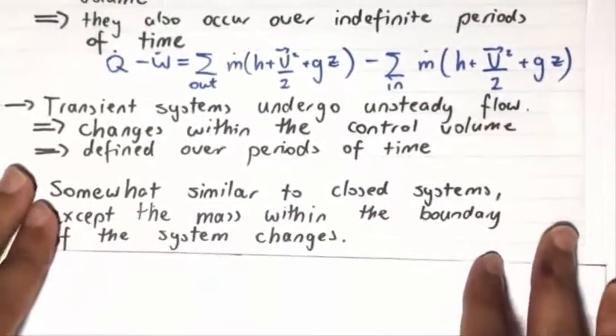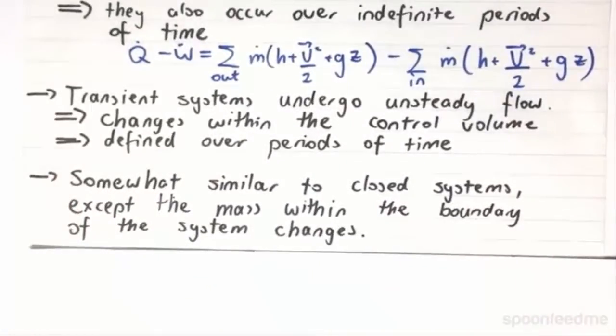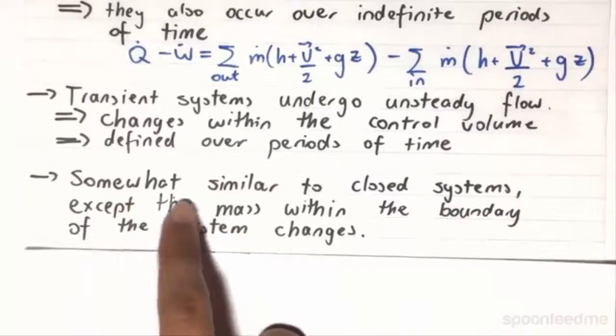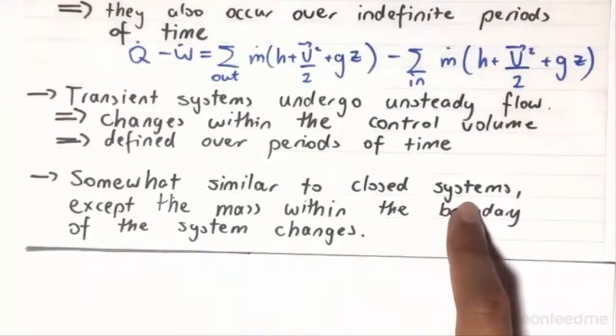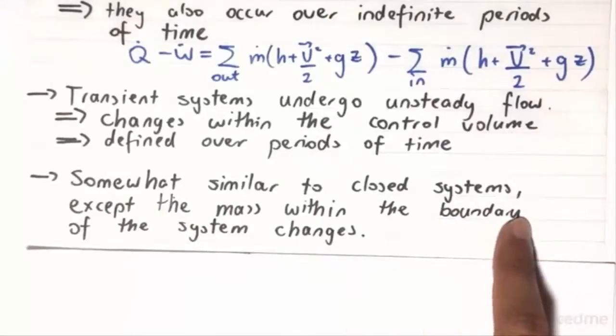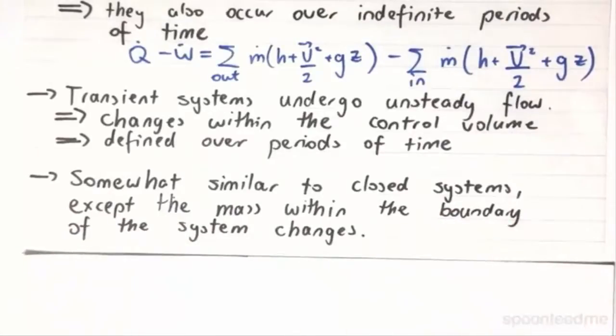So they are somewhat similar to the closed systems. If you look back at our closed system analysis, we were not working in terms of rates. Rather, we were working in terms of defined values and defined processes over defined times. So they are rather similar to these closed systems. However, the key difference as to why they aren't closed systems is the basic fact that the mass within the boundary of the system can change within these transient systems.